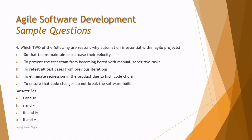Option C: to retest all test cases from previous iterations — we do that, but it's not specifically a reason why automation is essential. Option D: to eliminate regression in the product due to high code churn. Option E: to ensure that code changes do not break the software build — that is continuous integration, where we need to make sure additions don't break the build. The right answers are A and E.